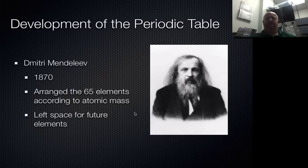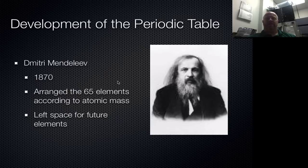One of the key things that made his table very powerful is he put the elements into groups and into periods, organizing them by their properties and not only by their numbers. In addition, he left some space for future elements — he actually predicted that there are elements out there that had not yet been discovered, and he predicted those elements with pretty high accuracy.